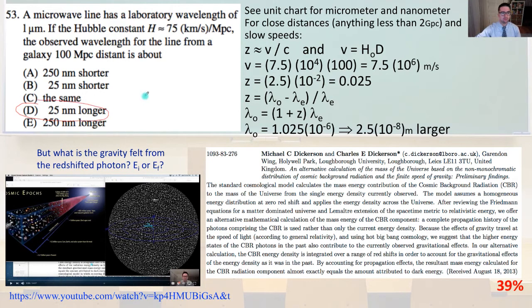And I want to take you on a quick thought experiment. So we have a difference in the energy between when it was emitted and when it was observed. So what is the gravity felt from the redshifted photon? Do we feel the gravity from the photon when it was emitted because of the finite speed of gravity? Or do we feel the gravity from the photon when it was observed when it had the lower energy? If we feel the gravity from the photon when it had the higher energy,